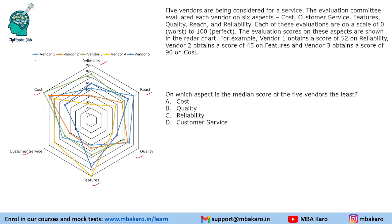For example, vendor one obtained a score of 52 on reliability. Vendor one is the blue one. The center is zero, and the rings represent 10, 20, 30, 40, 50, 60, 70, 80, and 90 — so the maximum here is 90. The score of 52 falls between the 50 and 60 rings. Vendor two obtained a score of 45 on features — that's the orange one — and vendor three scored 90 on cost.